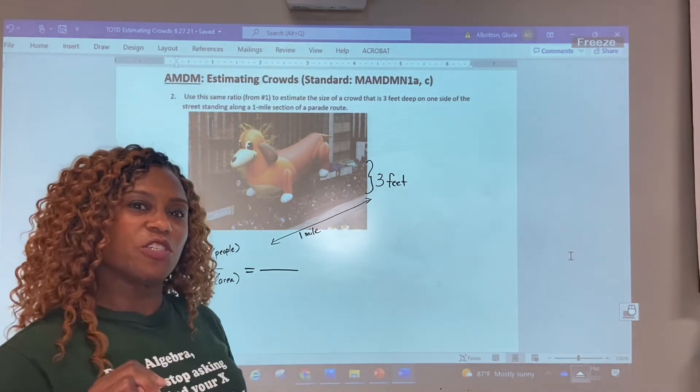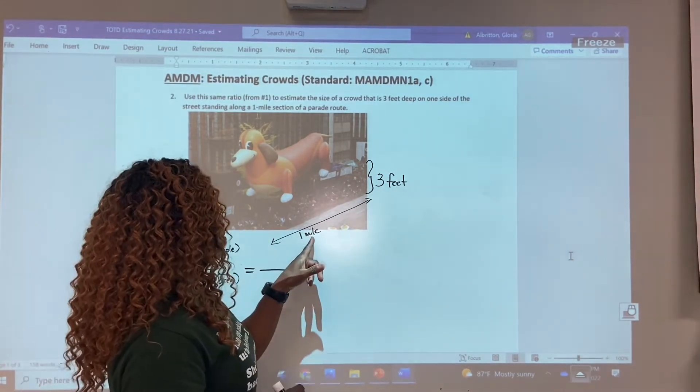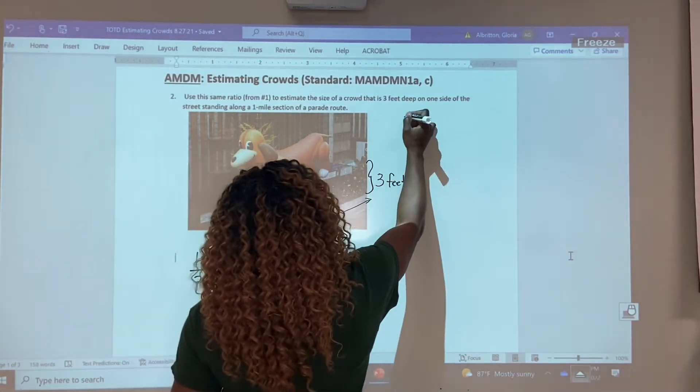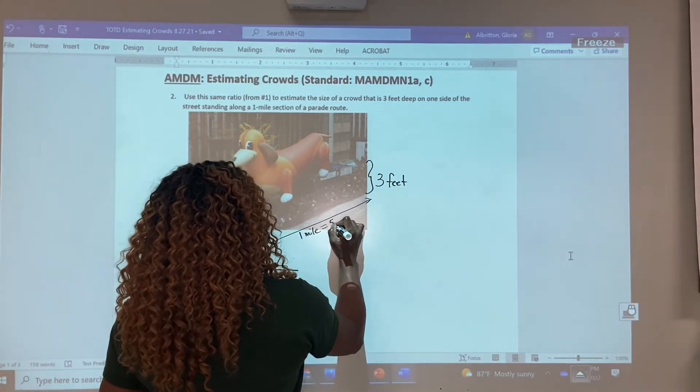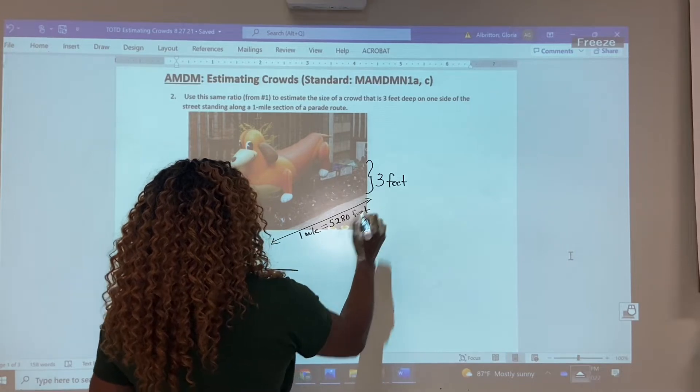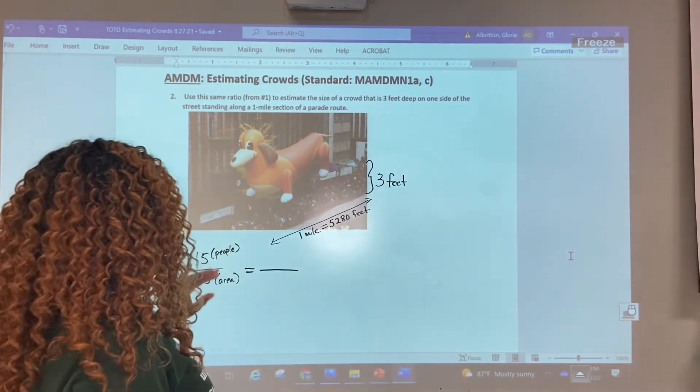Those are different units and your units have to be the same in order to calculate area. So what we need to do is convert one mile into feet. Some of you may already know that one mile is 5,280 feet. Now we can do the calculation because we have feet times feet.